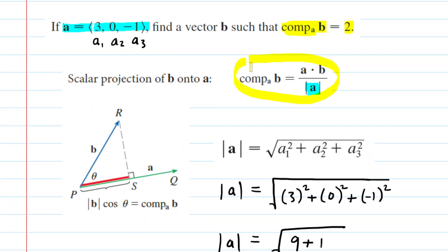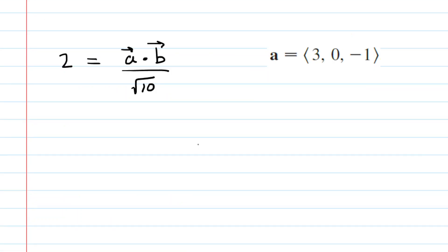With that magnitude in mind, and the fact that the scalar projection of B onto A has a value equal to 2, what we'll do is plug in. We'll plug in 2 for this quantity here, and then again for the magnitude of A, we're going to plug in the square root of 10.